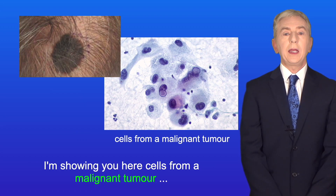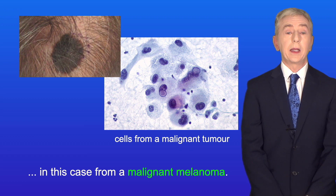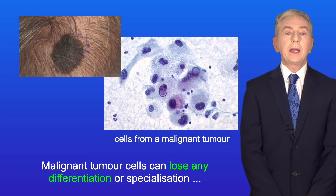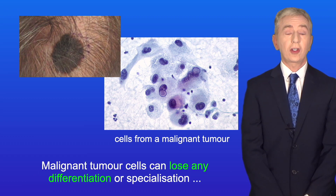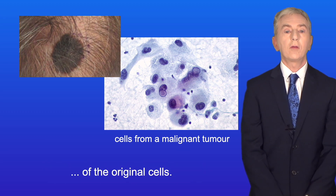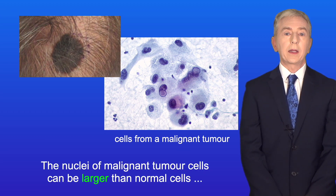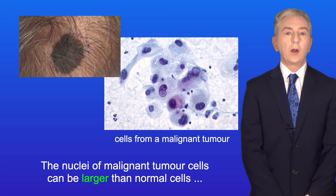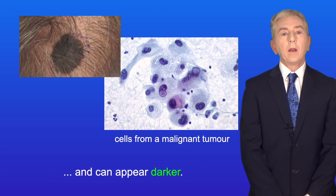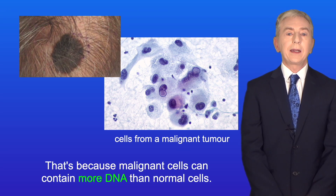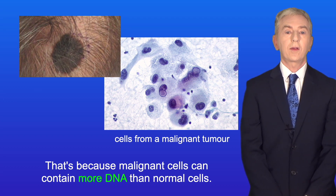Here are cells from a malignant tumour — in this case from a malignant melanoma. Malignant tumour cells can lose any differentiation or specialisation of the original cells, and the nuclei of malignant tumour cells can be larger than normal and appear darker. That's because malignant cells can contain more DNA than normal cells.